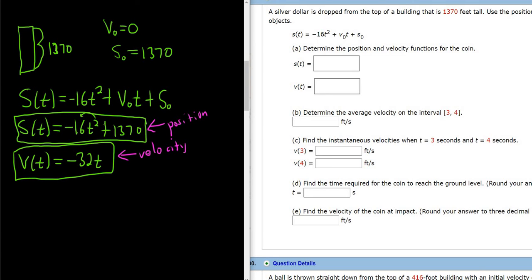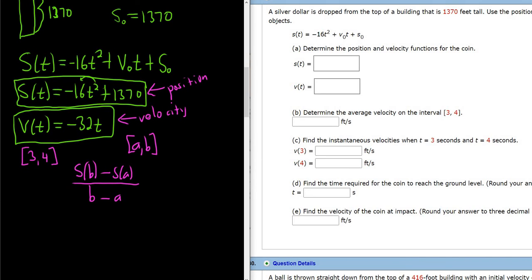Part b, determine the average velocity on the interval [3,4]. So our interval here is 3,4. The formula for the average velocity on an interval of the form [a,b] is s(b) minus s(a) over b minus a. So it's the change in position over the change in time. This is the formula for the average velocity. It's a really common mistake that people will use v here instead of s.